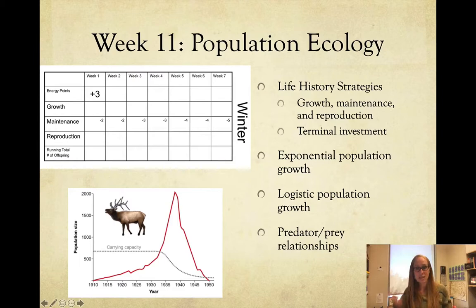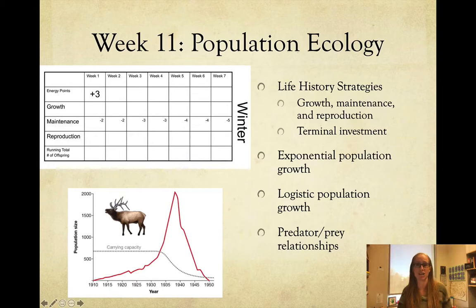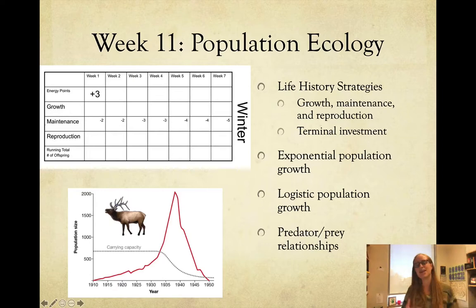Week eleven we got into population growth — this is when all your fruit flies died. We looked at exponential growth, logistic growth, and predator-prey relationships. We also did life history strategies, playing the beetle game where you put energy into growth, maintenance, and reproduction. We have different strategies and different survivorship curves: some practice terminal investment in stable environments, while stochastic environments favor early reproduction.